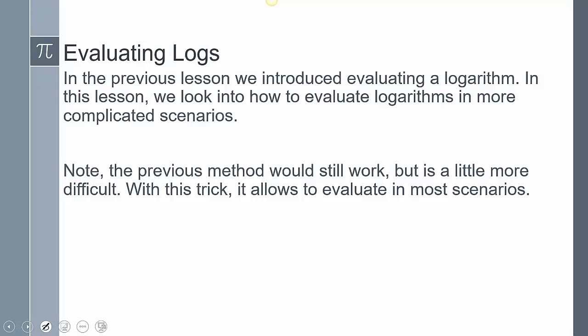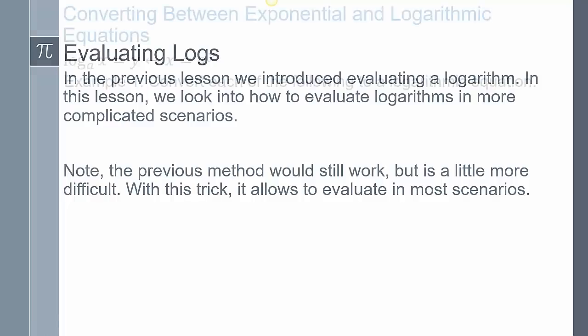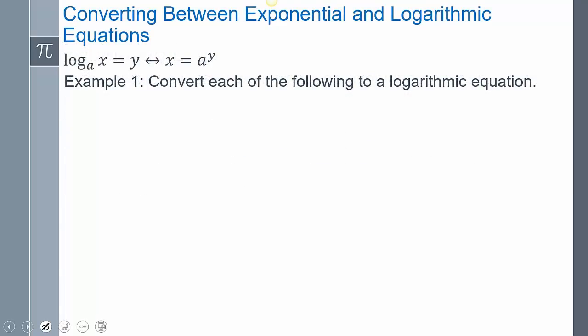Let's talk about exponential and logarithmic form. The logarithmic form has a log in it — that's how you know. The exponential form has an exponent in it — that's how you know. That's how we recognize which form we're dealing with based on how it looks.